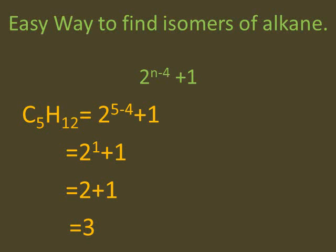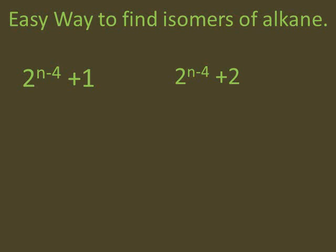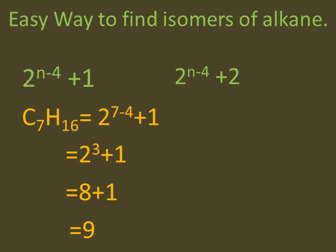For carbon 5, pentane: putting n=5 gives 2^(5−4) = 2^1 = 2, and 2 plus 1 gives 3 — so pentane has 3 isomers. For carbon 6, hexane: putting n=6 gives 2^(6−4) = 2^2 = 4, and 4 plus 1 gives 5 — so hexane has 5 isomers. For heptane with 7 carbons: 7 minus 4 is 3, and 2^3 = 8, plus 1 gives 9 — so heptane has 9 isomers.